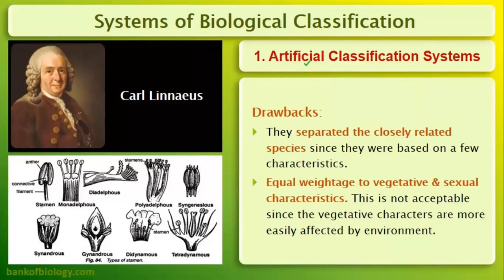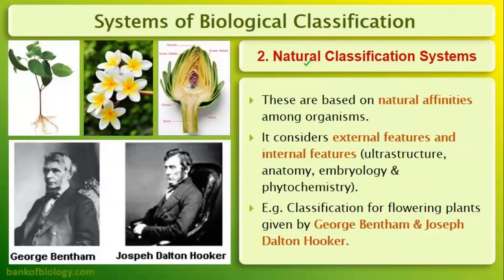The earliest classification system led to the creation of the current classification systems. In the natural classification system, equal weightage was given to vegetative and sexual characters. This is not fully acceptable because vegetative characters are easily affected by the environment, whereas sexual characters relate to anatomy, which always remains the same.